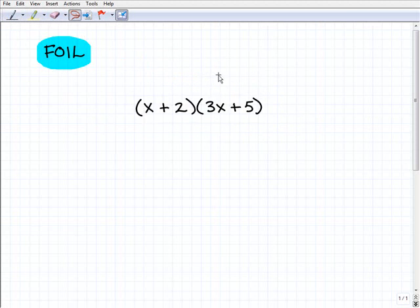So FOIL, first, outer, inner, last. So the first is referring to the first terms of each binomial. So we're going to multiply x times 3x. These are the first terms of those binomials, and when we do that, we get x times 3x. That is 3x squared. That's our F.